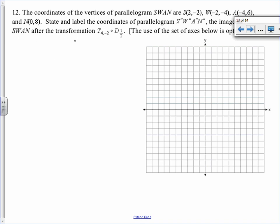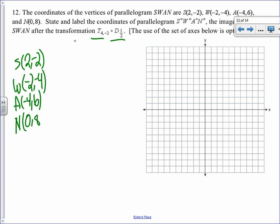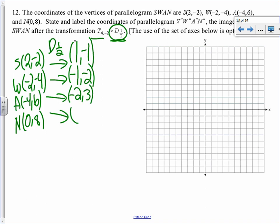We have a song for translations and dilations and all other transformations. We know translations we add, dilations we multiply. We're going to start by writing all of our points in organized fashion. S is 2, negative 2. W is negative 2, negative 4. A is negative 4, 6. N is 0, 8. We always start at the right, so we do the d of 1 half. We know again that dilation multiply. I'm multiplying each coordinate by a half. 2 times a half is 1. 2 times a negative half is negative 1. Negative 2 times a half is negative 1. Negative 4 times a half is negative 2. Negative 4 times a half is negative 2. 6 times a half is 3. 0 times a half is 0. 8 times a half is 4. Again I multiply each coordinate by 1 half.